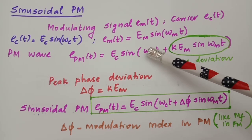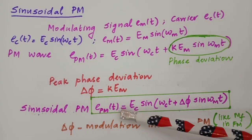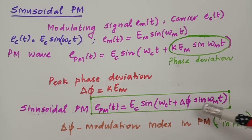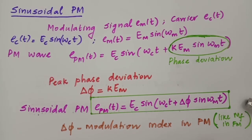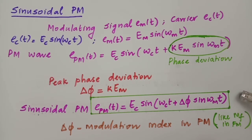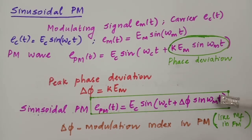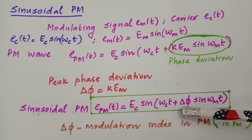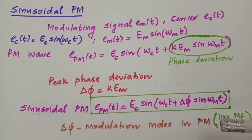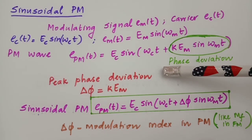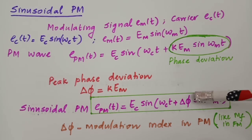Substituting this into the expression for the phase modulated wave, we get: e_PM(t) = E_C sin(ω_C t + Δφ sin(ω_M t)), where Δφ is the peak phase deviation. Comparing this with the frequency modulated wave expression E_C sin(ω_C t + M_F sin(ω_M t)), the expressions are almost identical — M_F in FM has simply been replaced by Δφ, which is the phase modulation index.